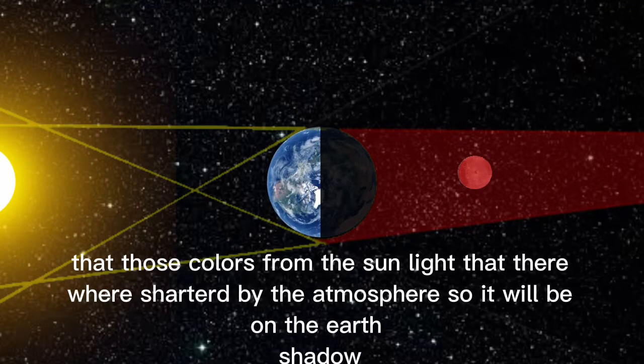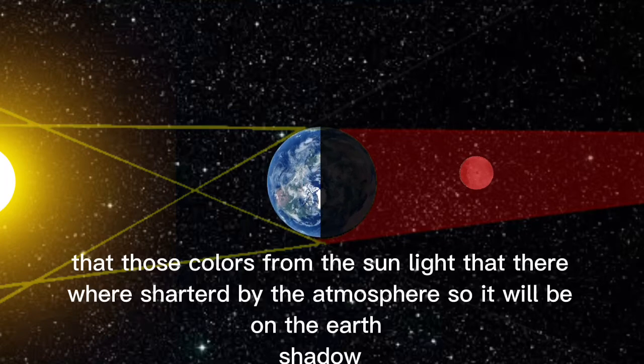Those colors from the sunlight that are scattered by the atmosphere will be on the earth's shadow. It would look like this.